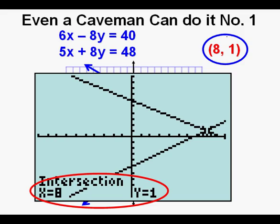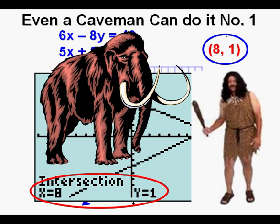We graph by pressing Zoom 6. We solve by pressing 2nd Trace 5, then wait for it to graph, then Enter, Enter, Enter. This time Og scored a perfect hit — the answer is 8 comma 1. It looks like Og's days of eating rotten mastodon meat may soon be over.